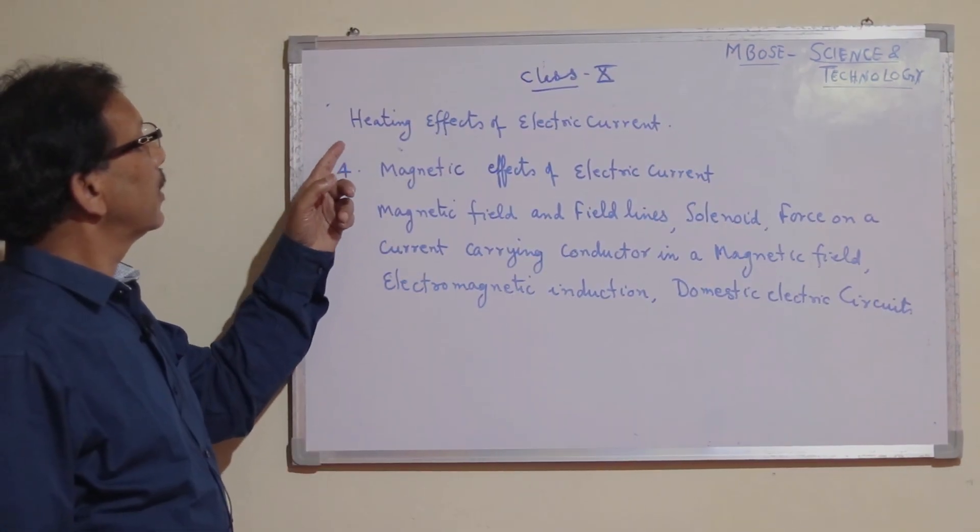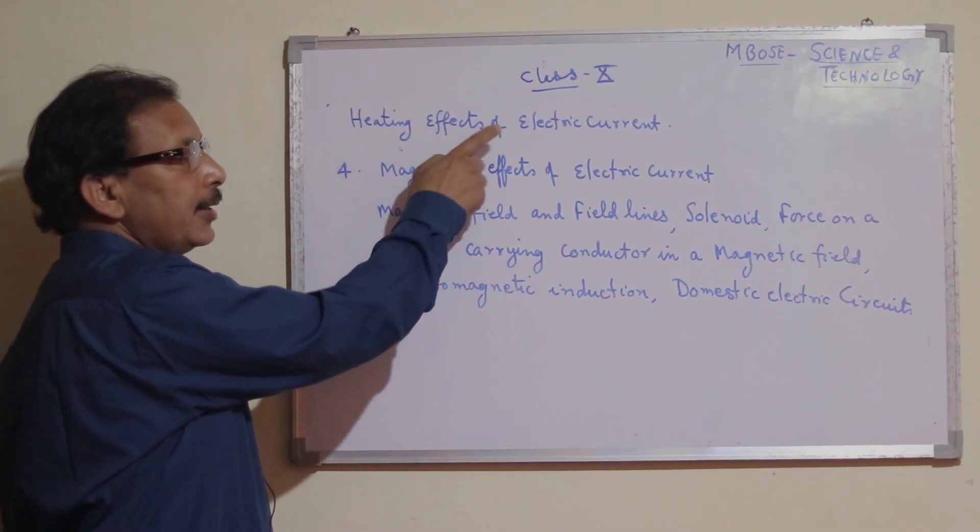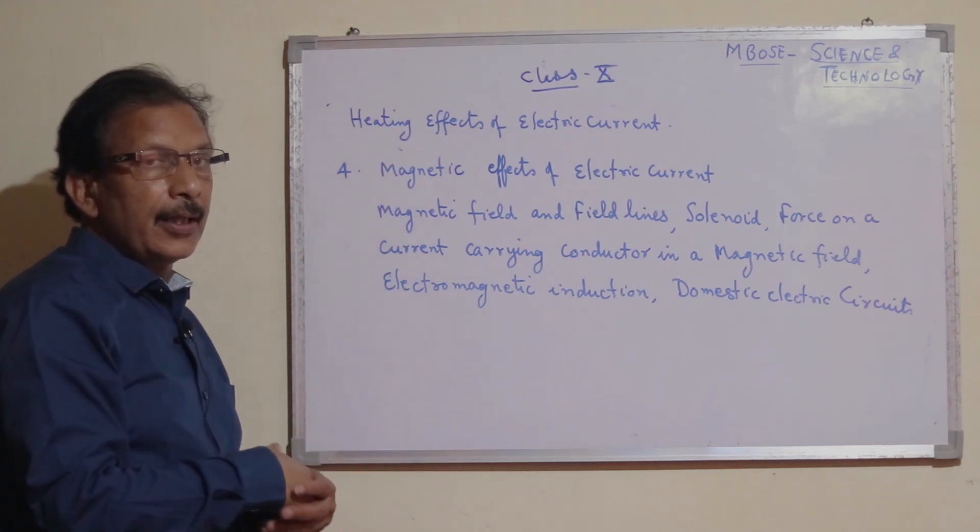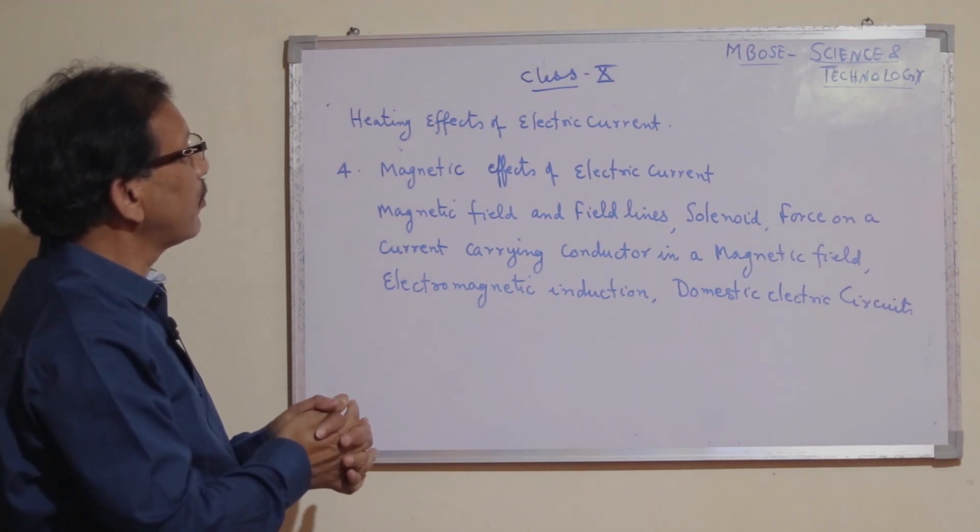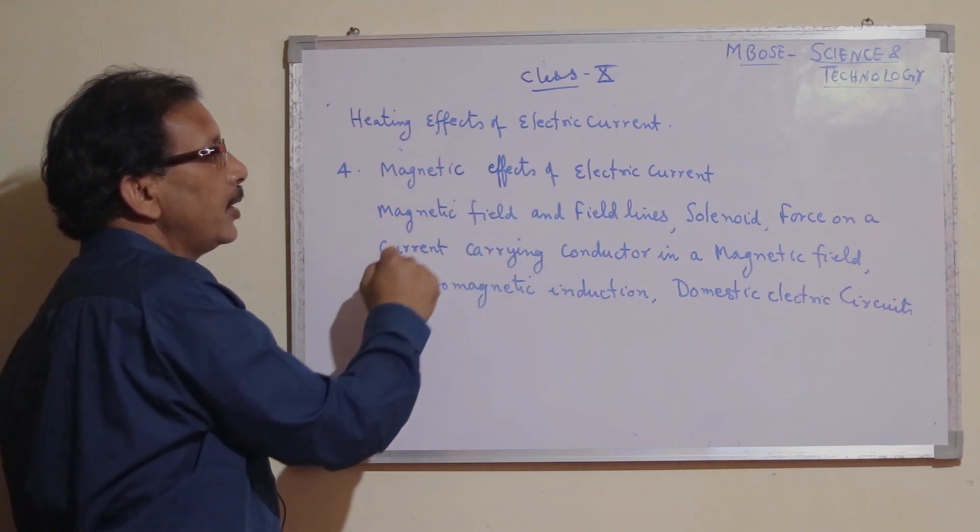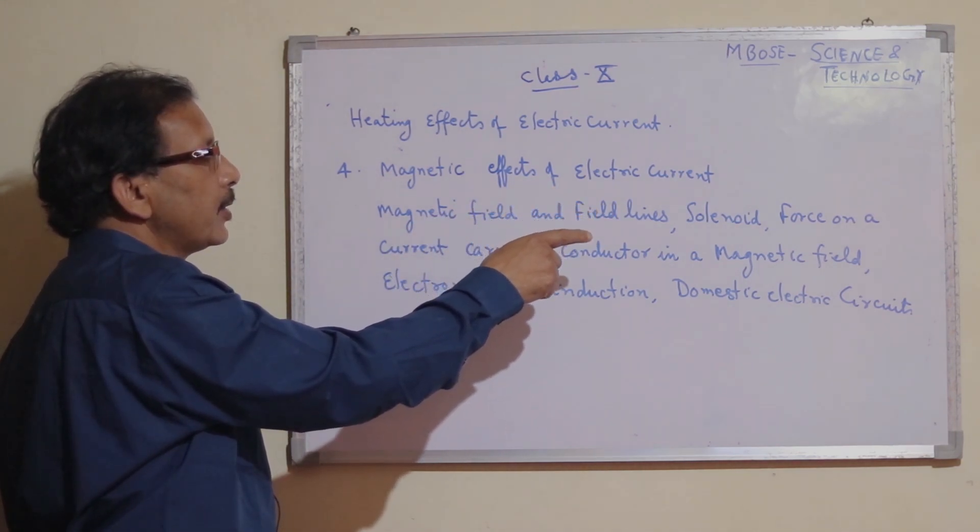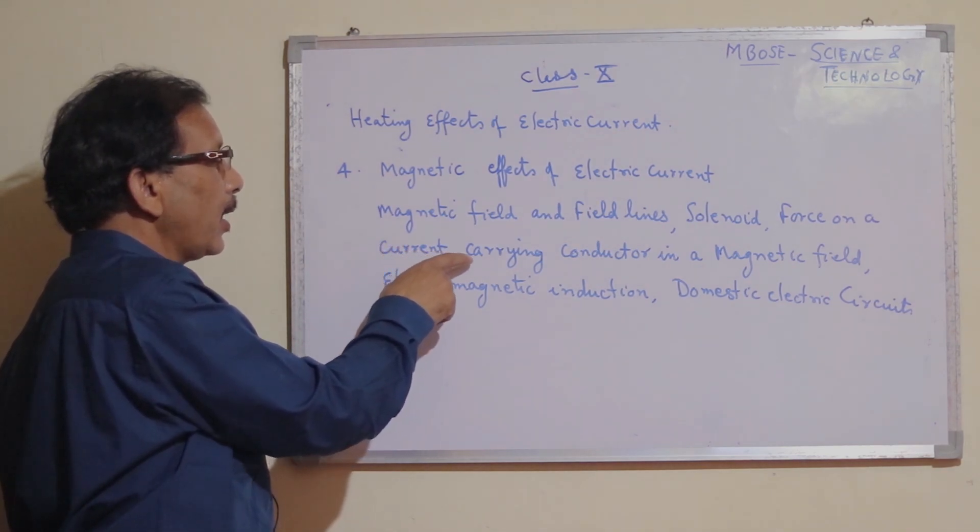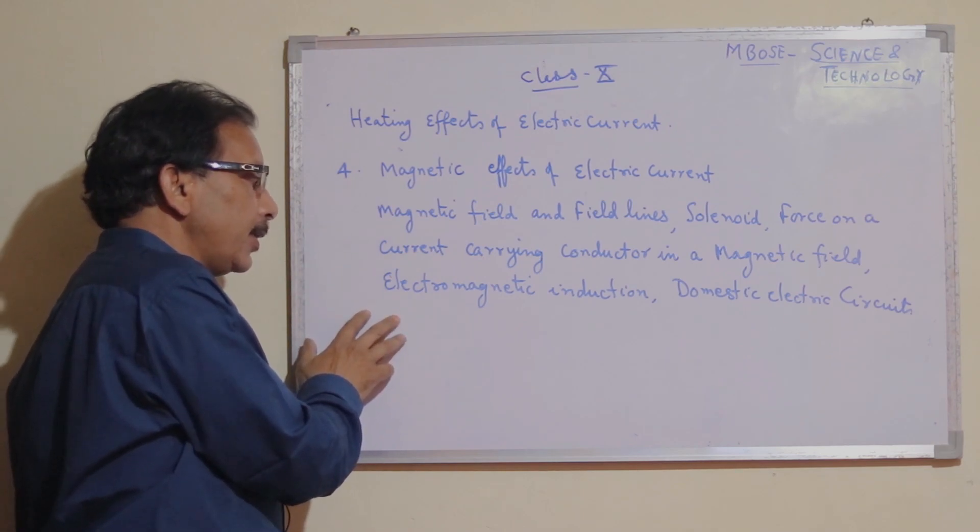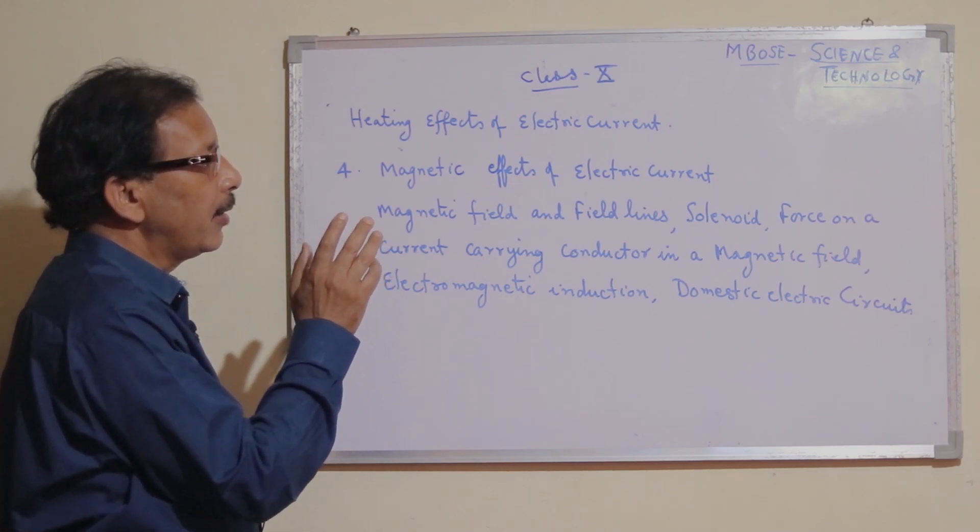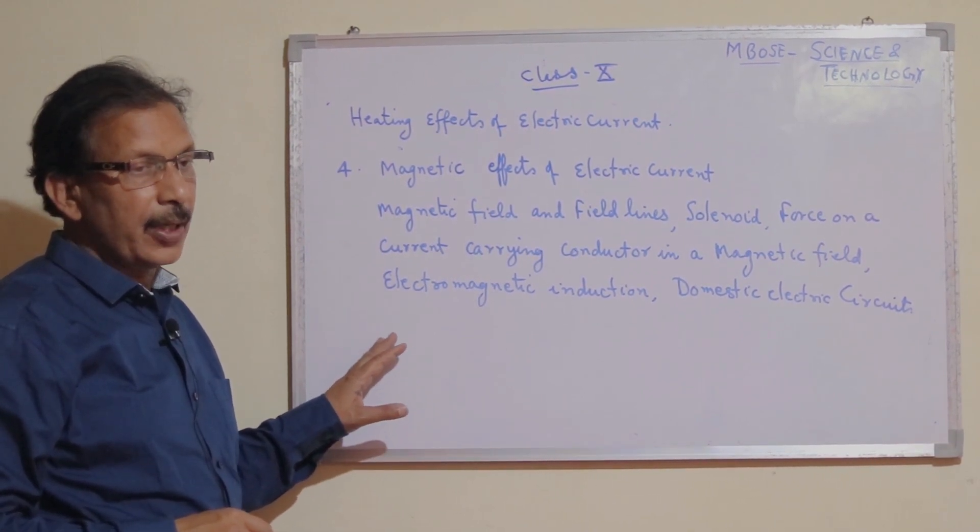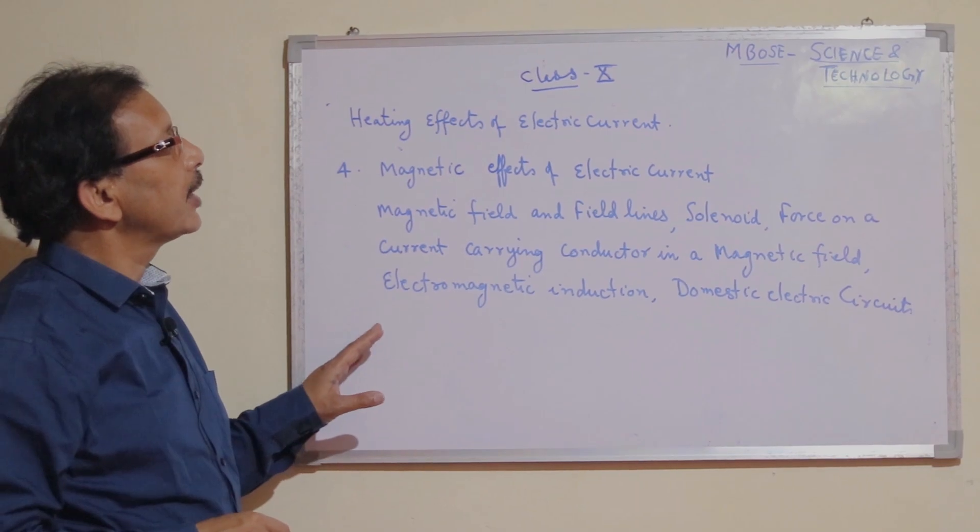The last topic of Electricity is heating effects of electric current. Then, the last topic of Physics is magnetic effect of electric current, covering magnetic field and field lines, solenoids, forces on a current-carrying conductor in a magnetic field, electromagnetic induction, and domestic electric circuits. This concludes the Physics part of Class 10 MBOSE Science and Technology.